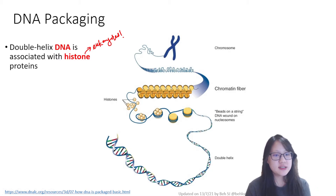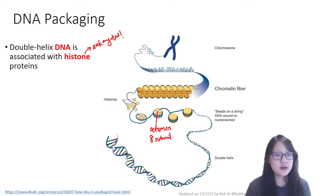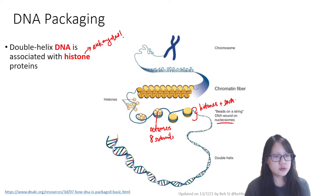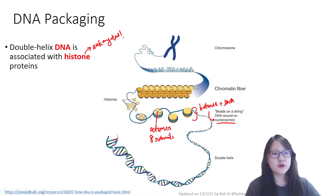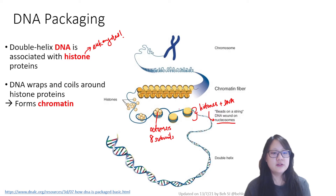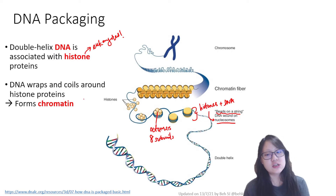Histones are usually octomers, which means they are made out of eight different subunits. So there are eight different histones. Eight histones with the DNA around them make up something called nucleosomes. Many of these nucleosomes form what we know as chromatin. So this entire structure — DNA wrapped around histones — sometimes we call it beads on a string. The string is the DNA, the beads are the histones, and this structure is chromatin.